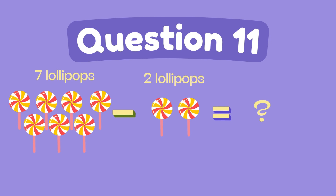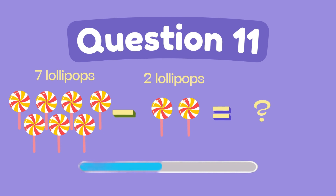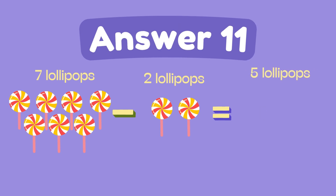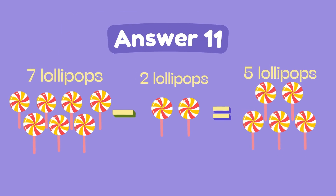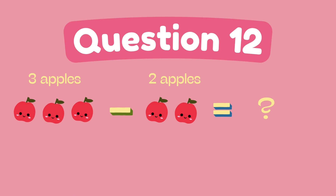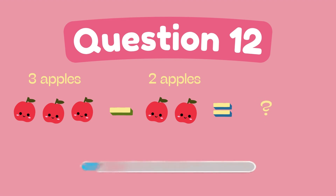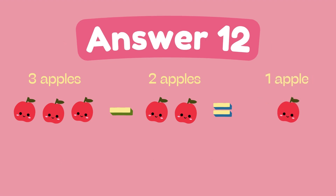What is 7 minus 2? The answer is 5. What is 3 minus 2? The answer is 6.